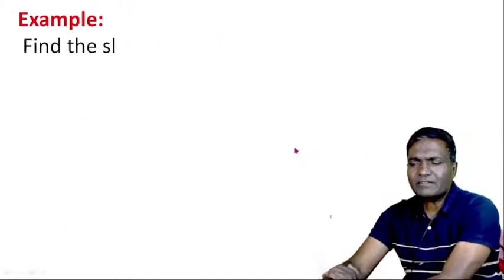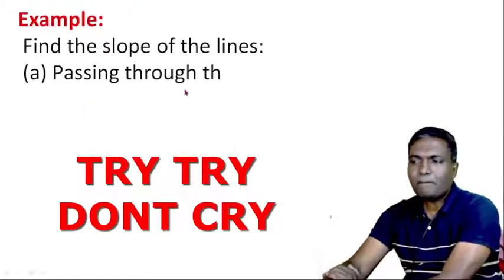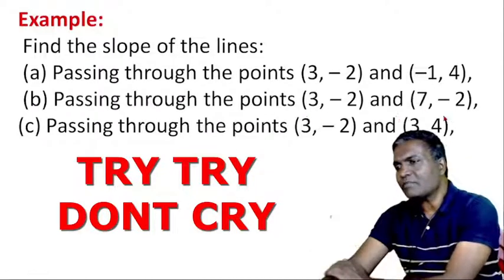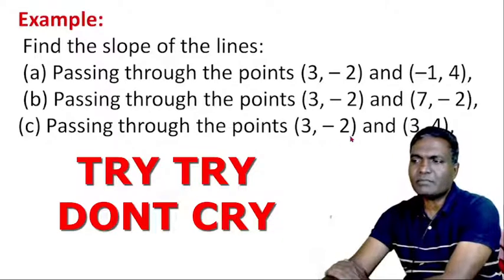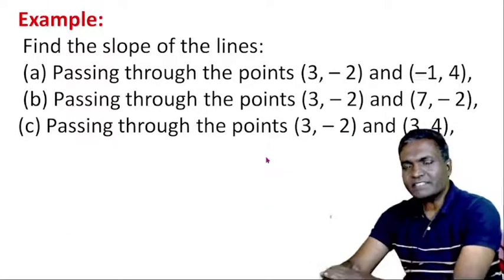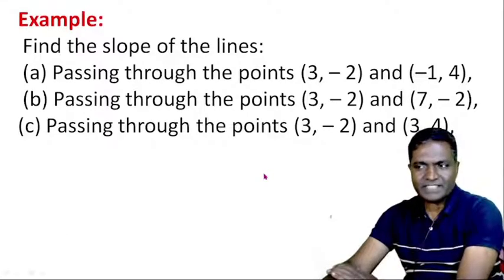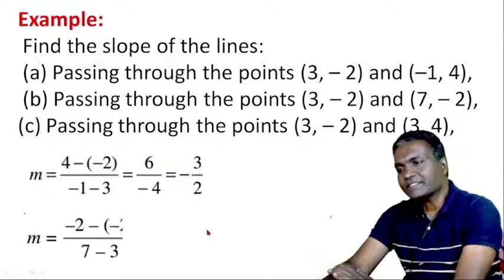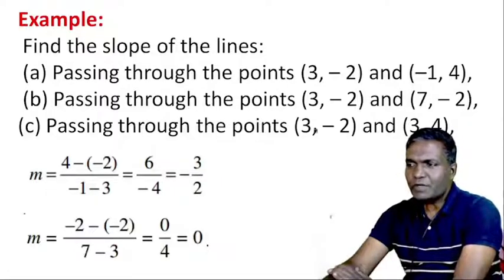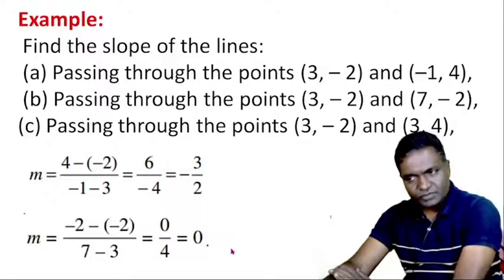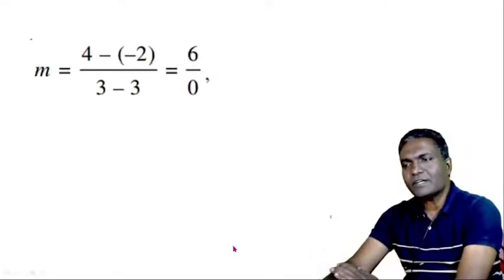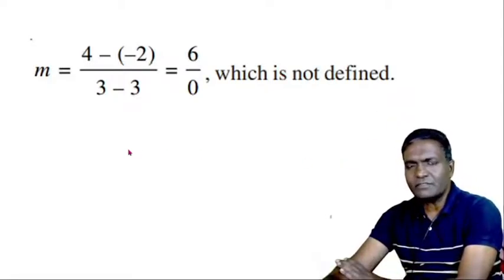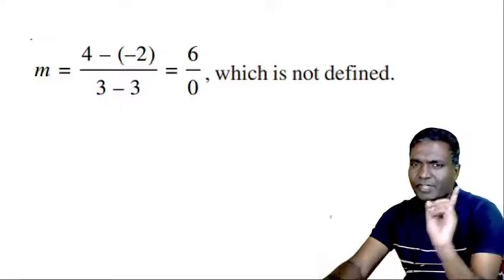Here are practice problems. Find the slope of the lines passing through: (i) (3, -2) and (-1, 4); (ii) (3, -2) and (7, -2); (iii) (3, -2) and (3, 4). Try these yourself. The answers are: first slope is -3/2; second slope is 0 (since y2 - y1 = -2 - (-2) = 0, x2 - x1 = 7 - 3 = 4); third slope is 6/0, which is not defined.